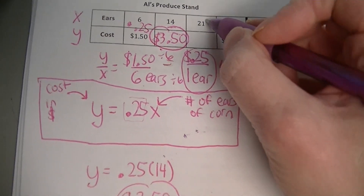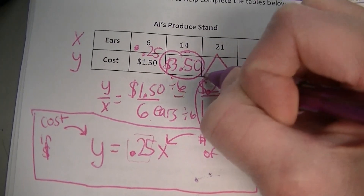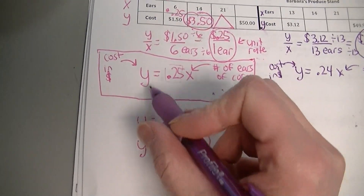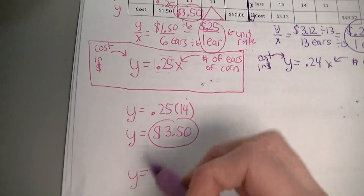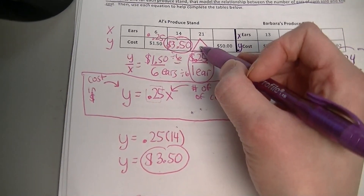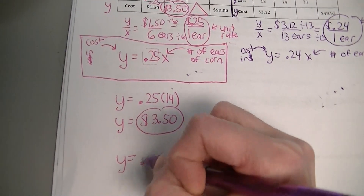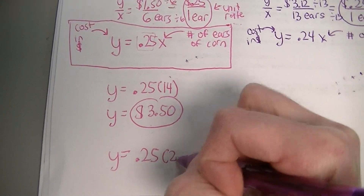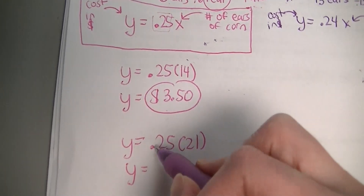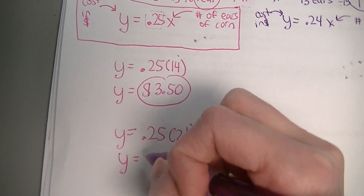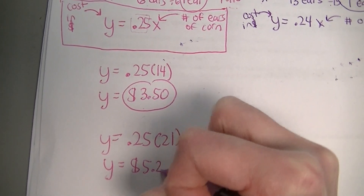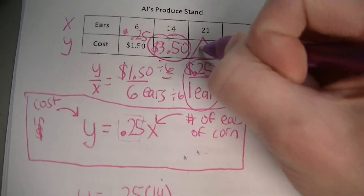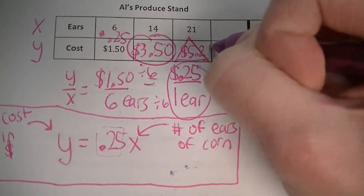Now for the next missing value — I'll designate this one with a triangle. I'm using the same equation. Y equals 25 hundredths times x, but we know x is 21. So y equals 25 hundredths times 21, which is $5.25. I'll put a triangle around that answer. So right here in the table we write $5.25.